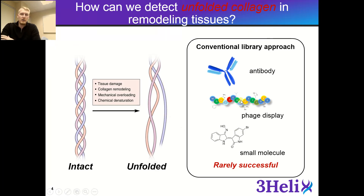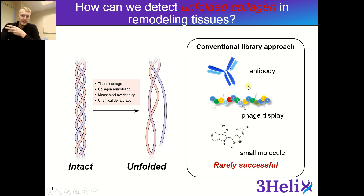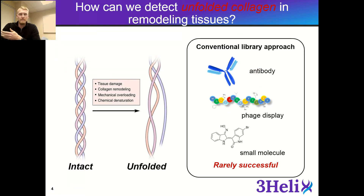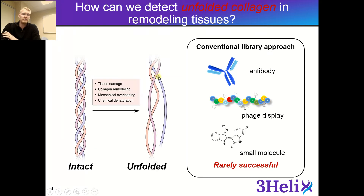Additionally, the smaller peptides and small molecules have varying degrees of affinity, which makes it hard for widespread use. The antibodies are also very specific for a certain collagen type, such as type 1, type 2, or type 4, and they lose affinity when trying to recognize an unstructured protein.